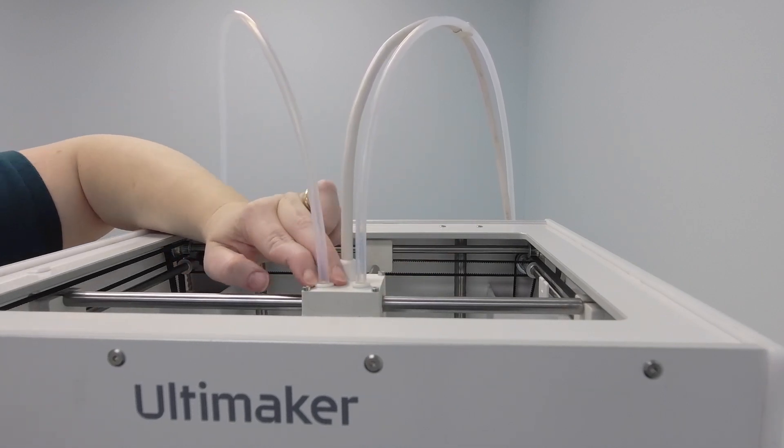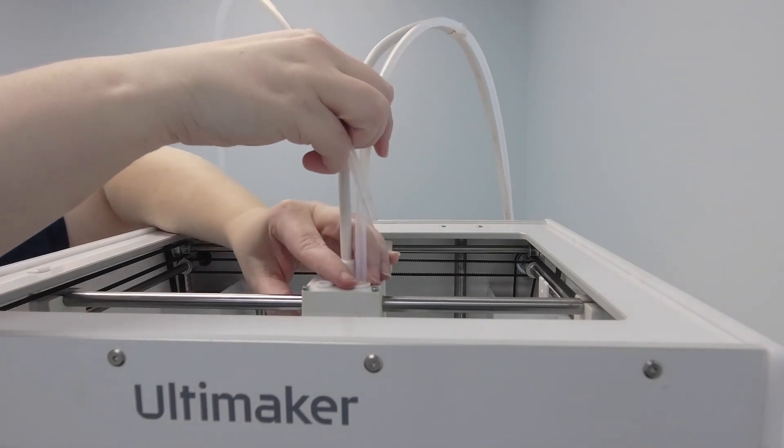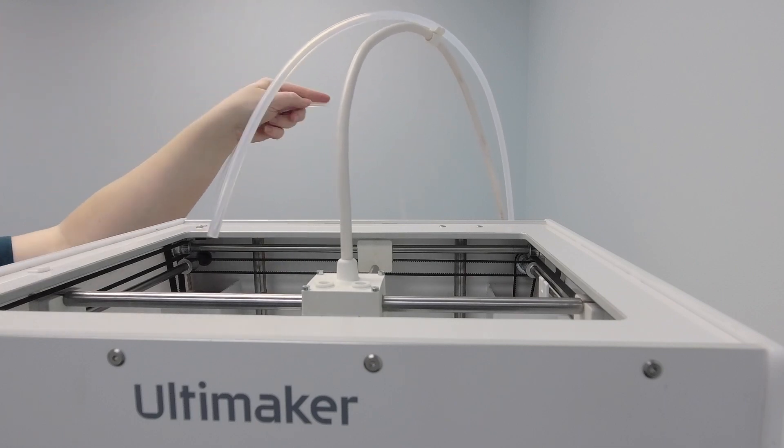Press down on the collet with two fingers and pull up on the tube. It should release pretty easily. Do the same on the other. You can go ahead and tuck the tubes out of the way.